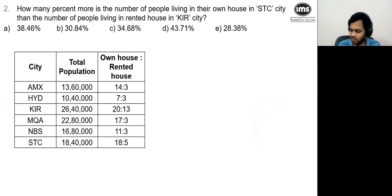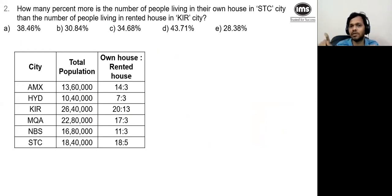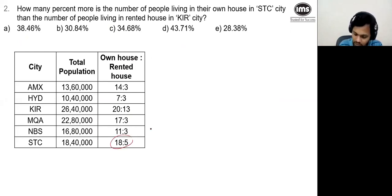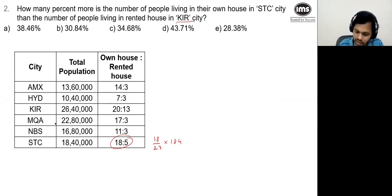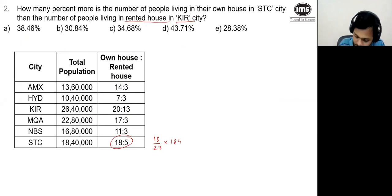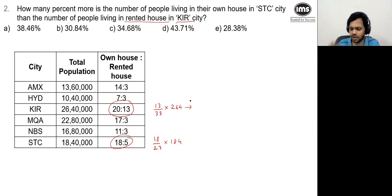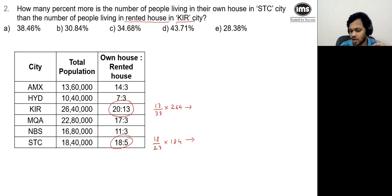Second one — most of you are saying option A. The question asks how many percent more is the number of people living in own house in STC compared to rented house in KIR. The relevant column is own house to rented house. Own house in STC: 18 upon 23 × 184 = 144. Rented house in KIR: 13 upon 33 × 264. 264 ÷ 33 = 8, so 8 × 13 = 104. These are the two numbers to compare.